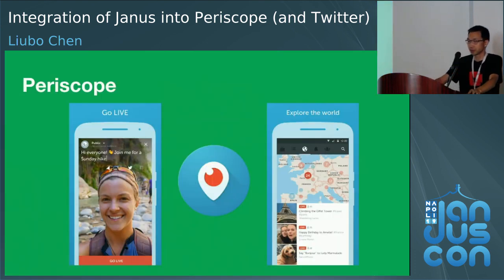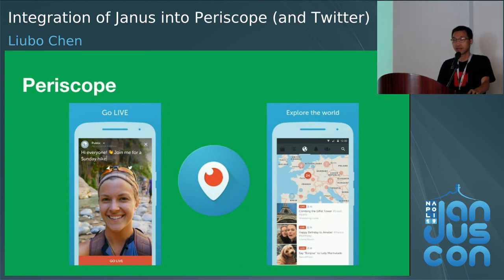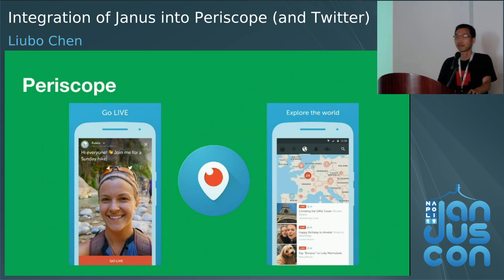So what is Periscope? Periscope is Twitter's interactive live video streaming app, which is available on Android, iOS, and web. Using Periscope you can broadcast live video and interact with people via hearts and text comments, and you can watch popular live videos from all over the world.